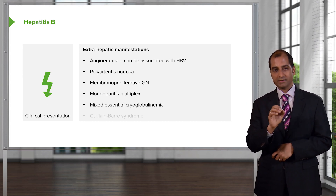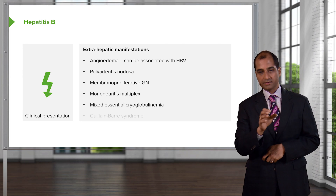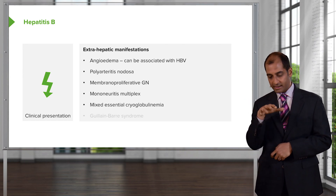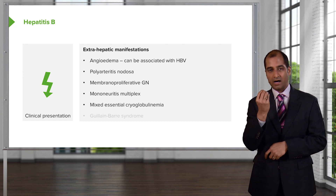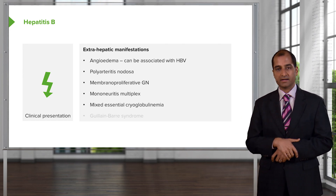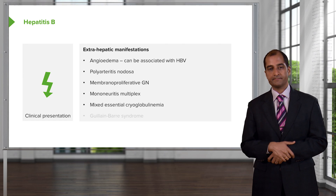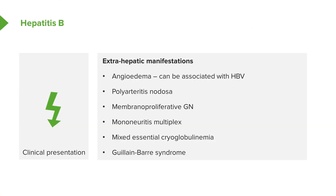Two major cold-related issues for your boards: when exposed to cold and the fingers become cyanotic, that's Raynaud's. If you find cryoglobulinemia, think cold. Also, whenever you hear about a patient with ascending paralysis preceded by a viral infection, think Guillain-Barré syndrome.